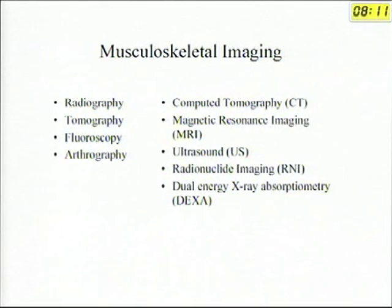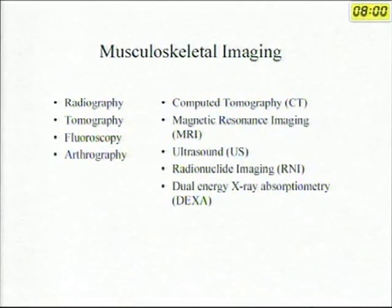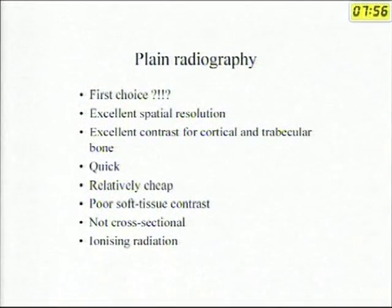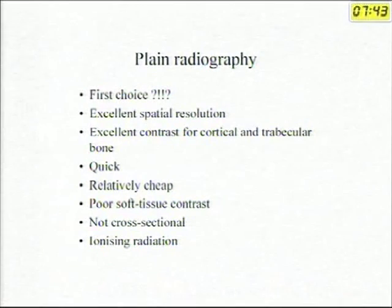Earlier, radiology was all about X-rays, tomography, fluoroscopy and injection orthography. Today, it is all about CT scan, MRI, ultrasound, radionucleotide imaging and DEXA scan. My focus would be predominantly on MRI. In any orthopedic patient, you first get a plain X-ray done — it is usually the first choice, relatively cheap and easy to do. It is good for cortical bone but does not tell you anything about soft tissue, and it is not cross-sectional.